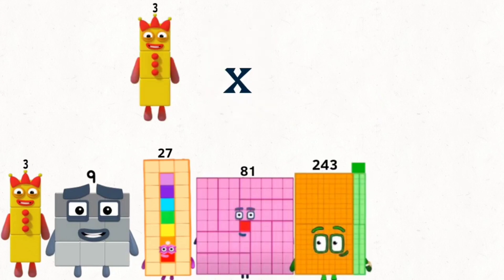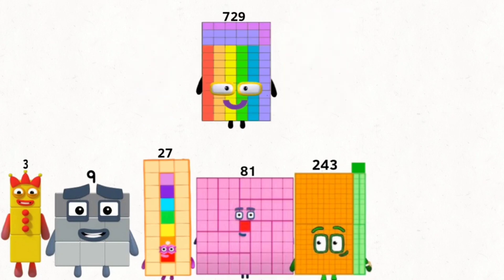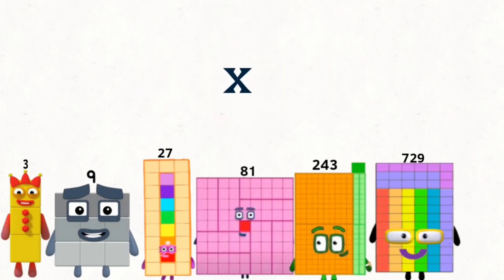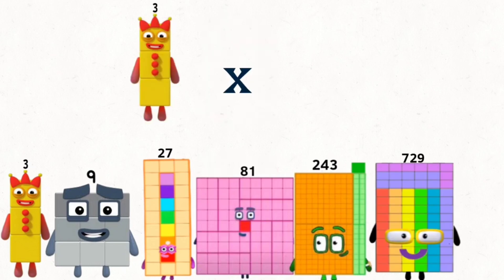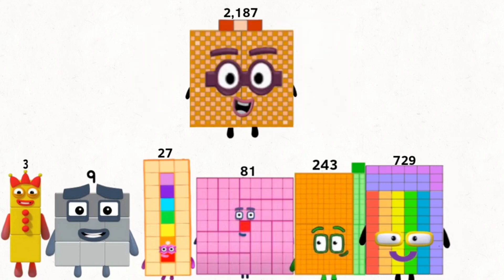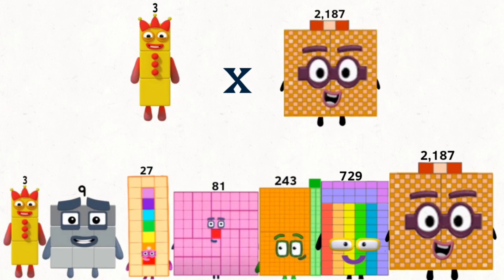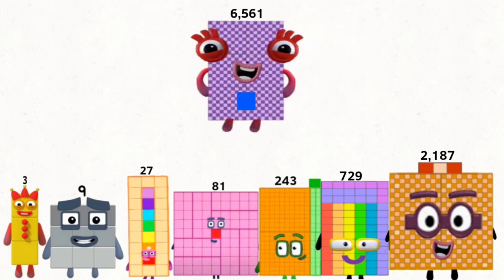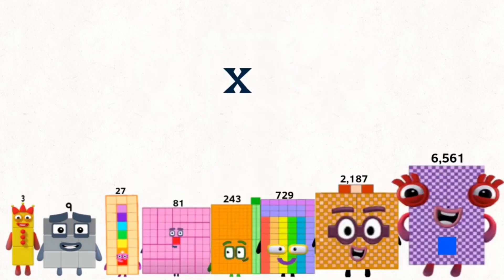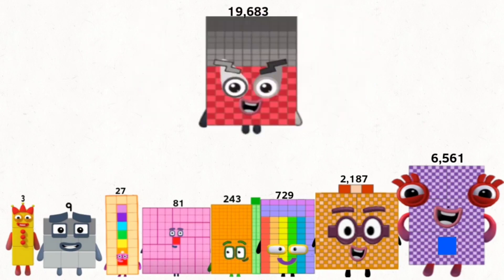3 times 243 equals 729. 3 times 729 equals 2,187. 3 times 2,187 equals 6,561. 3 times 6,561 equals 19,683.